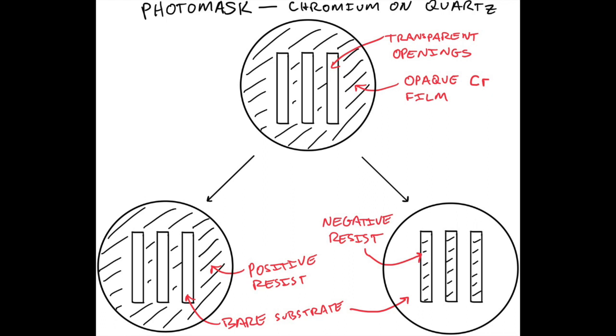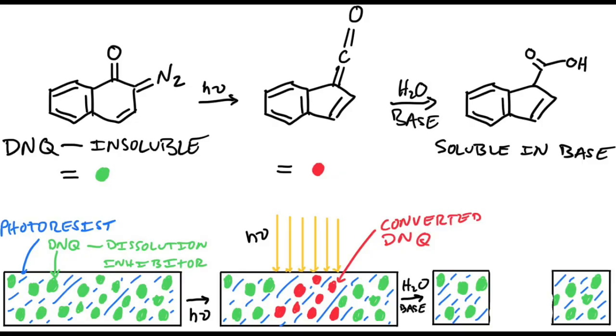The typical positive photoresist chemistry, there are many different kinds, but the one that is the oldest uses something called diazonapthoquinone and that is a complicated organic word but that material is a dissolution inhibitor or a solubility inhibitor. And so you start out with this DNQ molecule, you shine light on it, that turns into a ketene I believe is the functional group, then that further hydrolyzes into the carboxylic acid which is then soluble in base. The DNQ itself is insoluble but the carboxylic acid is soluble in base.